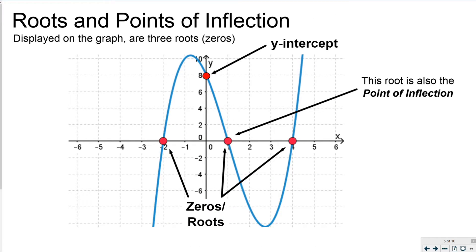Let's talk about some features, points and roots and points of inflection. Displayed on the graph are three roots. I've got a negative two zero root, a positive one and a positive four root.